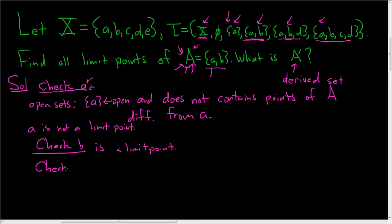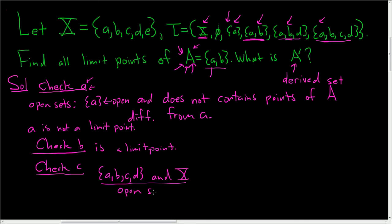Let's check little c. We look at all of the open sets containing little c — there are two of them, and both contain points of A different from little c. For example, one contains little b, which is in A and is not equal to little c. The other also contains little b. So little c is also a limit point.